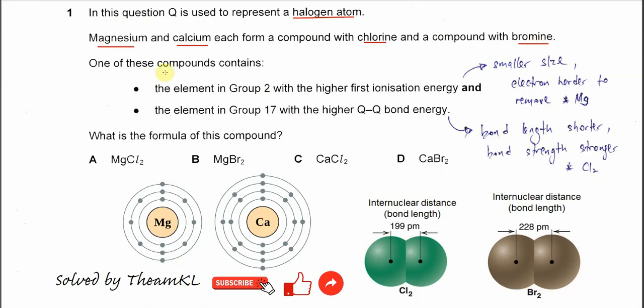One of these compounds contains the element in Group 2 with higher first ionization energy. First ionization energy is affected by two factors: nuclear attraction and the shielding effects.